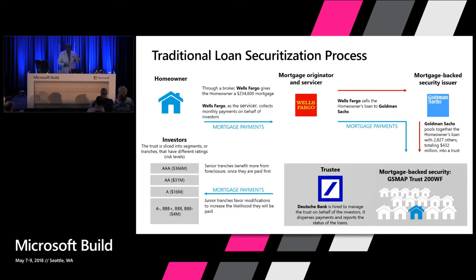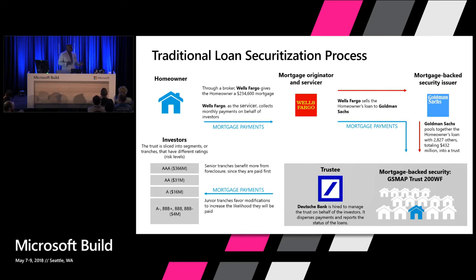Let me take you through the traditional loan securitization process, because I think it's important to understand the process and then see how blockchain — specifically smart contracts — addresses it. I may interchange the terms 'distributed ledger' and 'blockchain,' because many of our financial services customers are preferring distributed ledger as it's a little more contained than a traditional blockchain and a little bit faster. So the homeowner goes to Wells Fargo, buys a home — let's say $234,000, somewhere in the United States — and Wells Fargo sells that loan to Goldman Sachs.